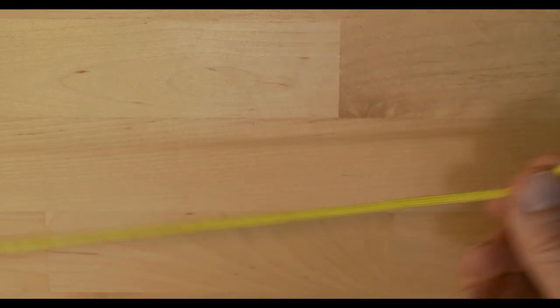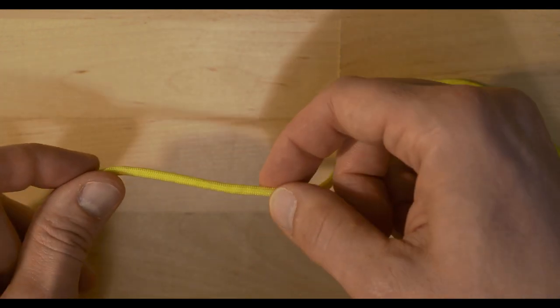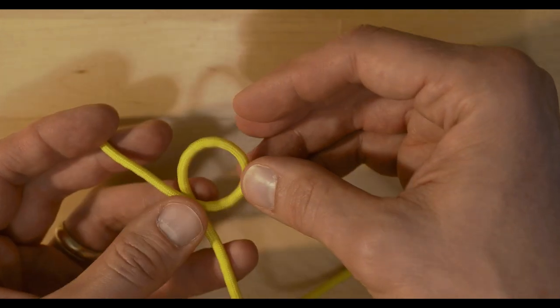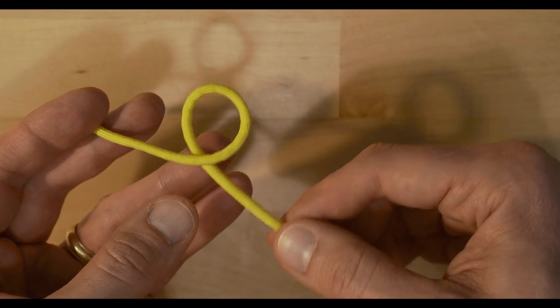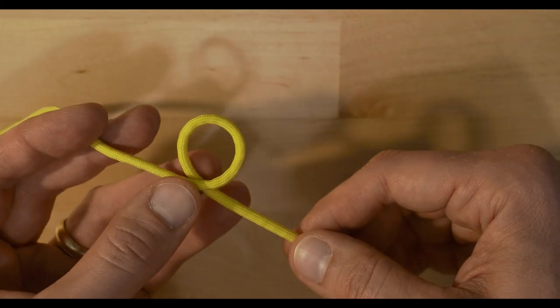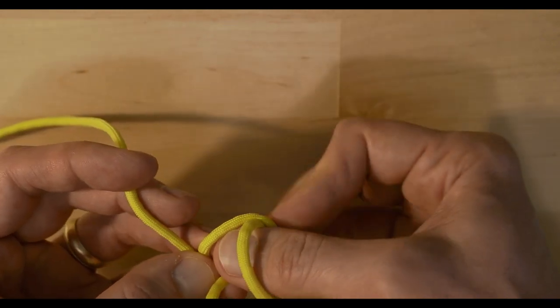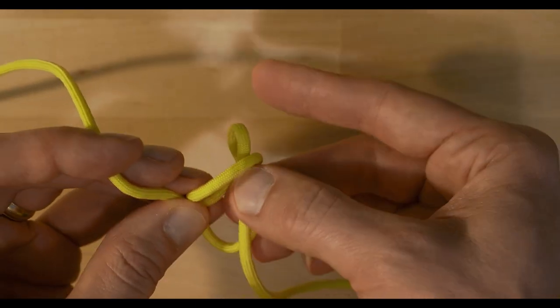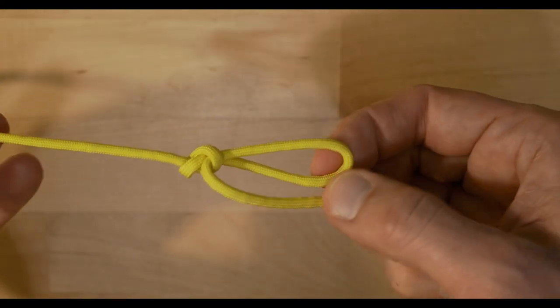If this is my working end over here, at some point I'm going to create an eye loop. And I do that by simply taking a twist, making a loop, so my working end is under my standing end. And then I take the working end and feed it back through. So I take a bite, feed it through, and pull it like that. Now I've created an eye loop up here.